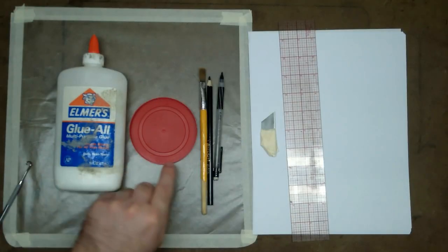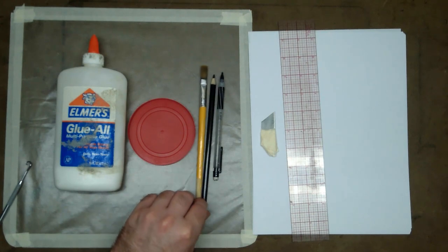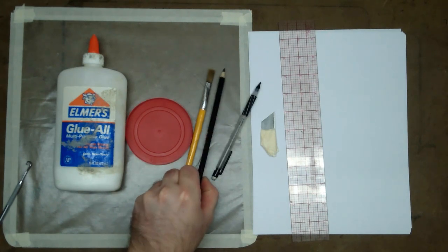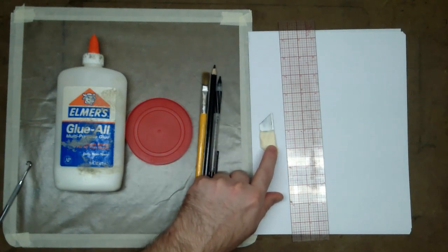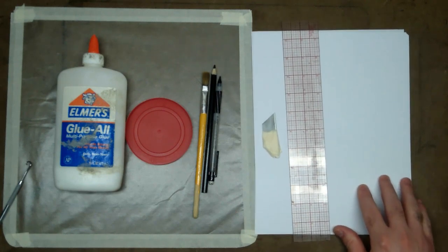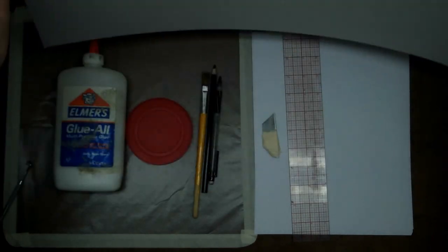Okay, starting this off, you're going to need some glue, a lid to pour your glue in, a paintbrush to spread the glue around, you're going to need a colored pencil, a regular pencil or mechanical pencil, a knife or a razor knife, something to cut the paper, you're going to need a ruler, computer paper, and a piece of poster board.